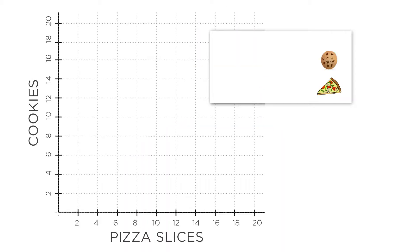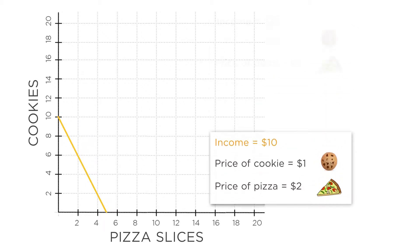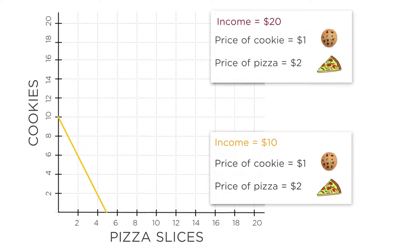We can also manipulate the budget constraint to represent a change in prices or a change in income. Before, we gave you an income of $10 and said that the price of pizza was $2 per slice and the price of a cookie was $1. Your budget constraint started out looking like this. What happens if you double your income? Now you have $20, so let's draw the new budget constraint.